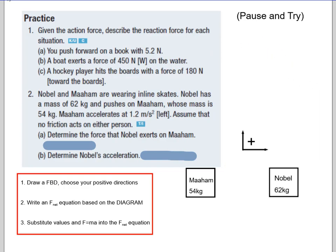Let's look at the next one. Noble and Mayhem are wearing inline skates. Noble has a mass of 62 kilograms and pushes on Mayhem whose mass is 54 kilograms. Mayhem accelerates at 1.2 meters per second squared to the left. So I've got Mayhem and he's gonna go in this direction. Assume that no friction acts on either person. So determine the force that Nobel exerts on Mayhem. So there's a force here. So if Nobel pushes on Mayhem to the left, then that is our applied force. So when I go to solve this problem, I've defined positive to the right. The choice is yours. You could have defined it to the left. It doesn't matter.